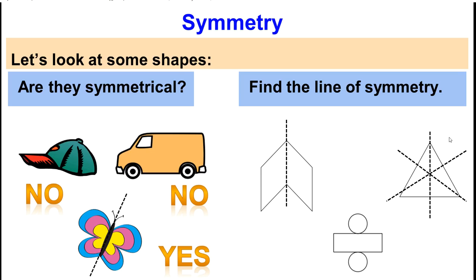And how about this division sign? How many lines of symmetry has it got? One going up and down and one going across. It has got two lines of symmetry.